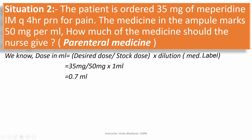The formula for dose in ml is: desired dose divided by stock dose, multiplied by dilution. Dilution means the label given on the medication — here it is 1 ml. The desired dose here is 35 mg, which is ordered by the physician.